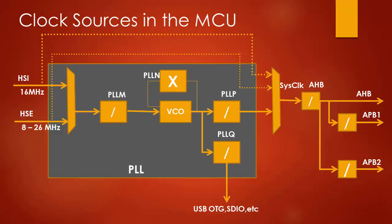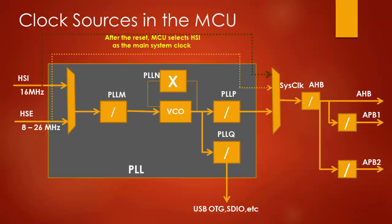When you reset the microcontroller, by default, the high-speed internal oscillator will be used to provide the clock. That means, by default, the MCU selects HSI — the High-speed Internal oscillator — as the system clock. This clock is internal to the MCU and its value is 16 MHz in the STM32F4xx microcontroller. So by default, the MCU system clock is selected as 16 MHz.